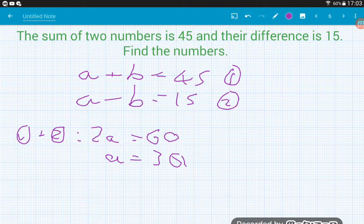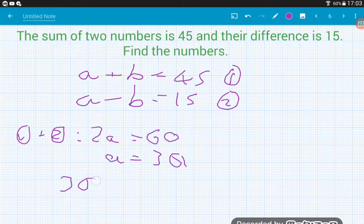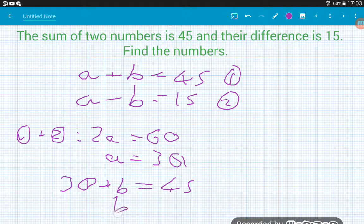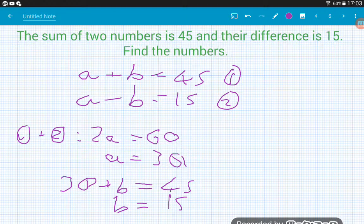So we now know what my first number is. A is equal to 30. If we substitute that into equation one, that would then become 30 add B is equal to 45. If we take away the 30, we get B is equal to 15. So there's the second part of my solution. So again, we can check that. Sum of my two numbers is 45. 30 add 15 is definitely 45. And the difference of my number is 15. 30 take away 15 is 15. Happy days.